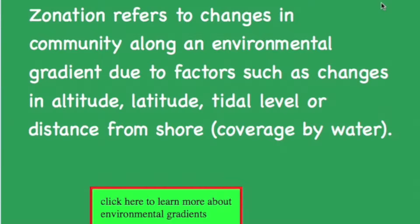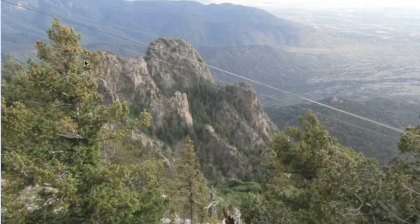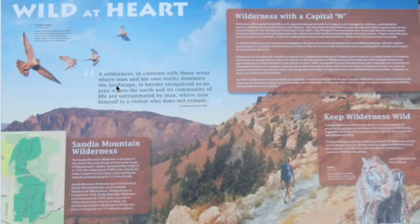This is from the IB ESS guide for first exams in 2017. Now, if you want to return to an earlier lesson on environmental gradients, you can click here. And now we're at the point where the tram car stops — here, some 7,000 feet or 2,300 meters above sea level. The Sandia Mountain Wilderness is just one part of a bigger protected area here in New Mexico.